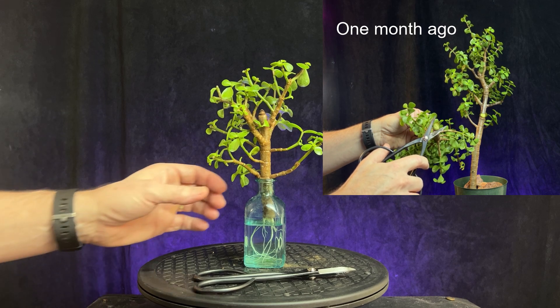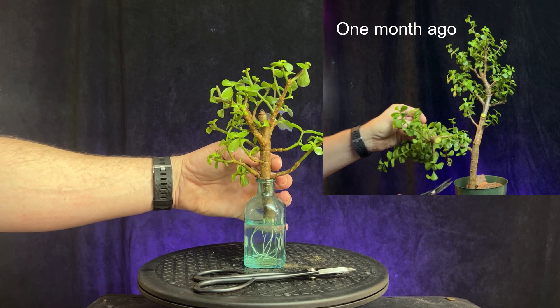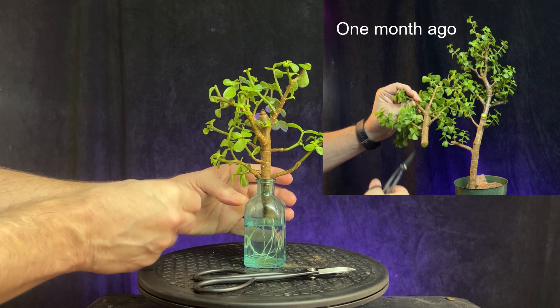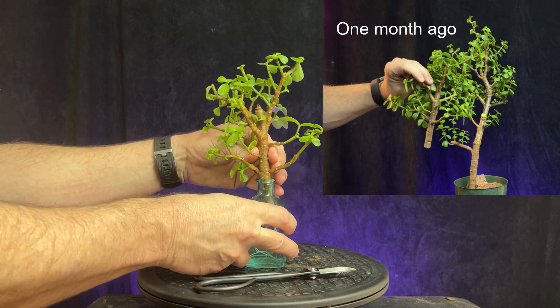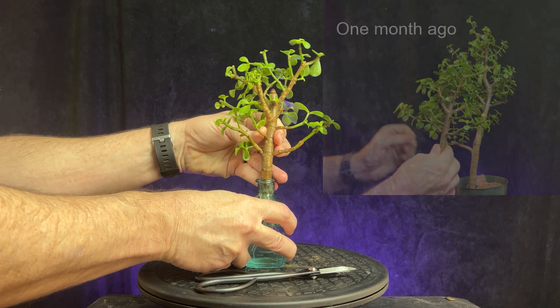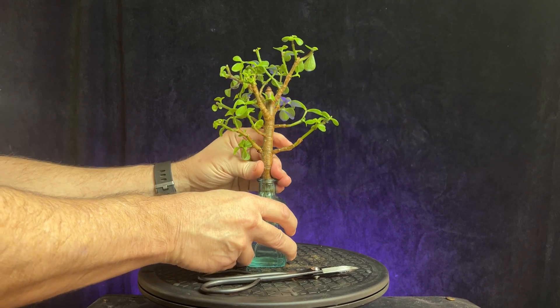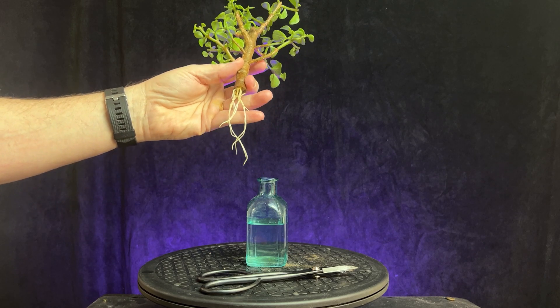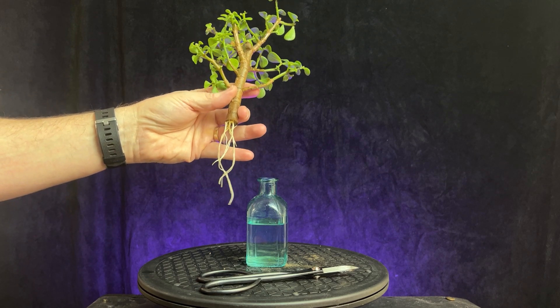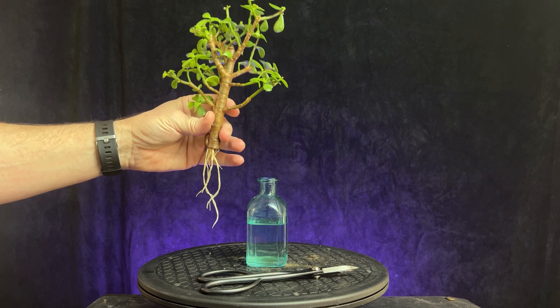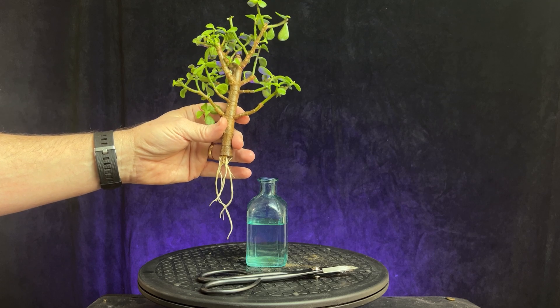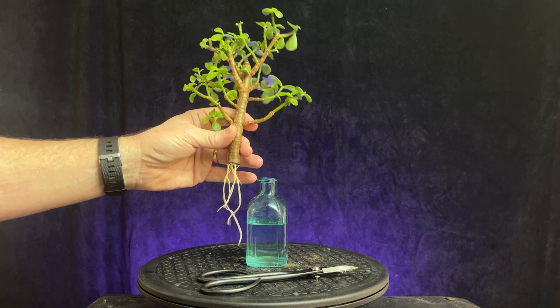About a month ago, I took this cutting off of that and dropped it in this vase full of water. Let me take it out so you can see the roots on it. So this is growth from less than four weeks ago. As you can see, they grow very fast, they root very fast, if the temperature and lighting is right.